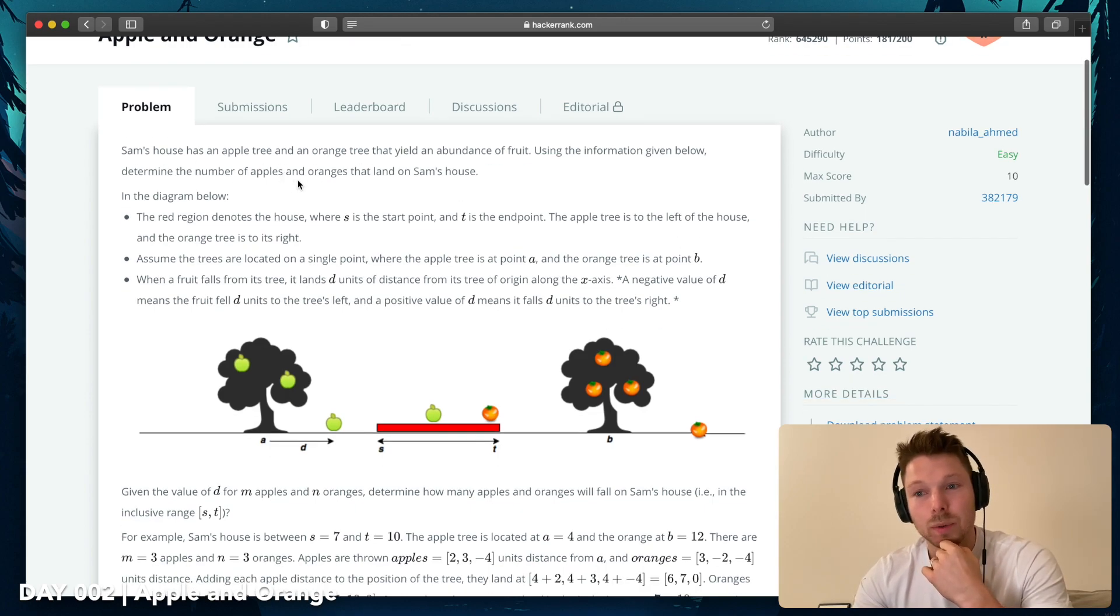Sam's house has an apple tree and an orange tree that yield an abundance of fruit. Using the information given below, determine the number of apples and oranges that land on Sam's house. The red region denotes the house, where S is the start point and T is the end point. The apple tree is to the left of the house and the orange tree is to the right.